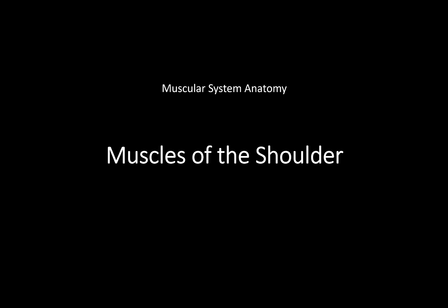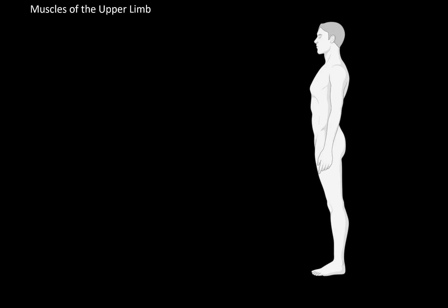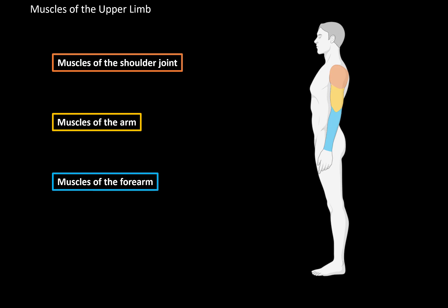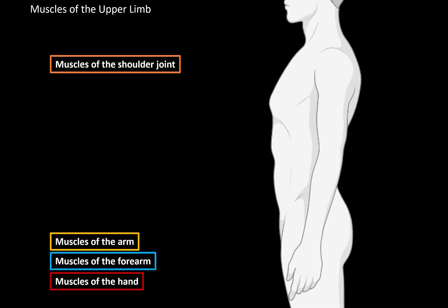What's up, Merite here, and in this video we will be looking at the muscles of the shoulders, which are a part of the upper limb. The muscles of the upper limb are divided into four parts according to their anatomical location: the muscles of the shoulder joints, the muscles of the arm, muscles of the forearm, and muscles of the hand. The muscles of the shoulder joint are what we're going to focus on today.